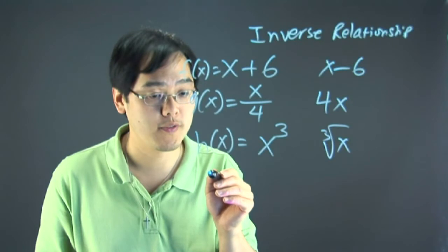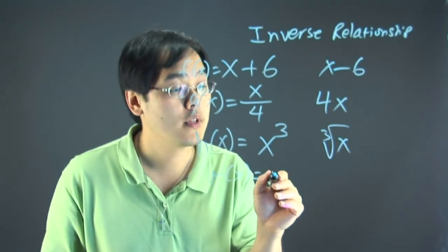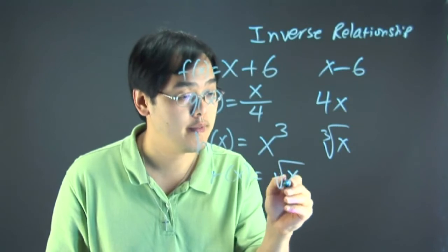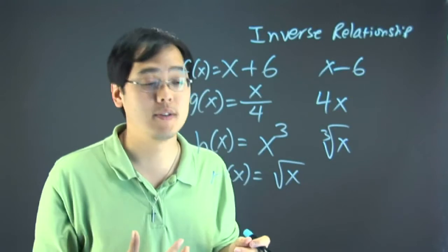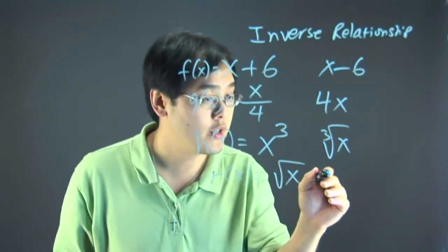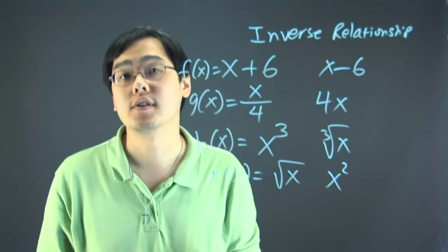Speaking of radicals, if the original function dealt with a square root of a function, then the inverse relationship would be squaring it, because square is the opposite of the square root.